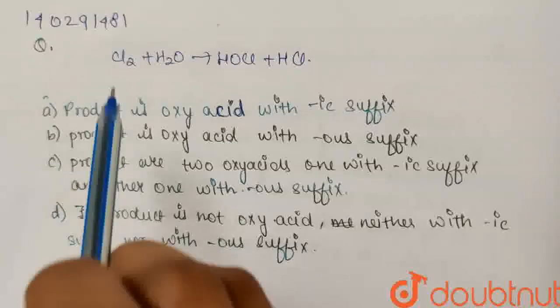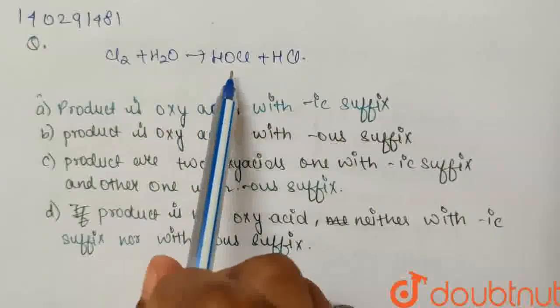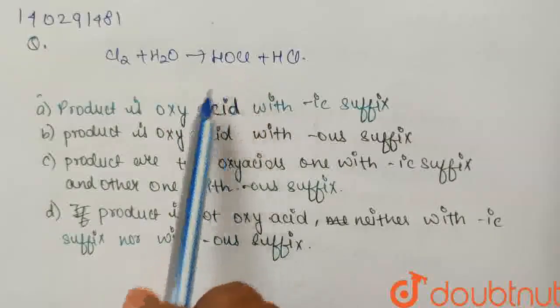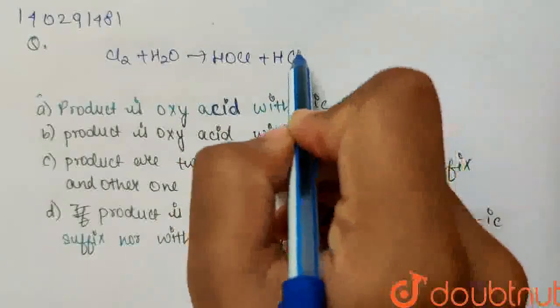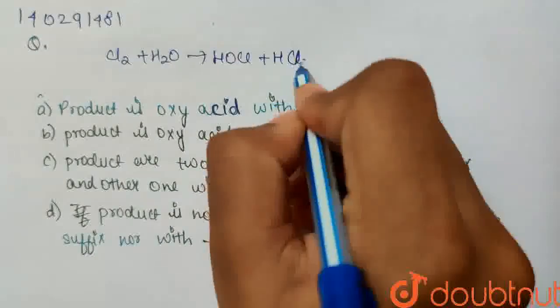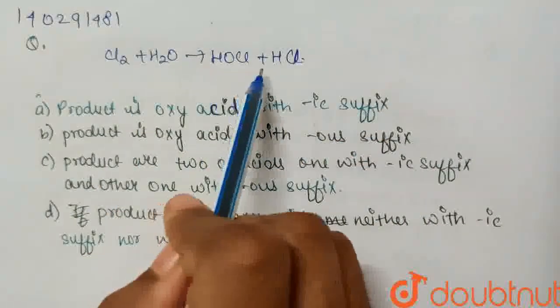Okay, so the question is, we have a reaction, and we have to tell what the product is. Meaning, is it an oxy acid or a normal acid? The reaction is Cl2 plus H2O gives HOCl plus HCl.